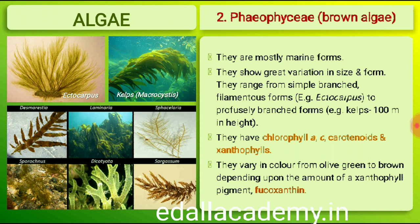The members of Phaeophyceae or brown algae are found primarily in marine habitats. They show great variation in size and form, ranging from simple branched filamentous forms like Ectocarpus to profusely branched forms as represented by kelps, which may reach a height of 100 metres. They possess chlorophyll-a, c, carotenoids and xanthophylls, and vary in colour from olive green to various shades of brown depending upon the amount of the xanthophyll pigment fucoxanthin present in them.